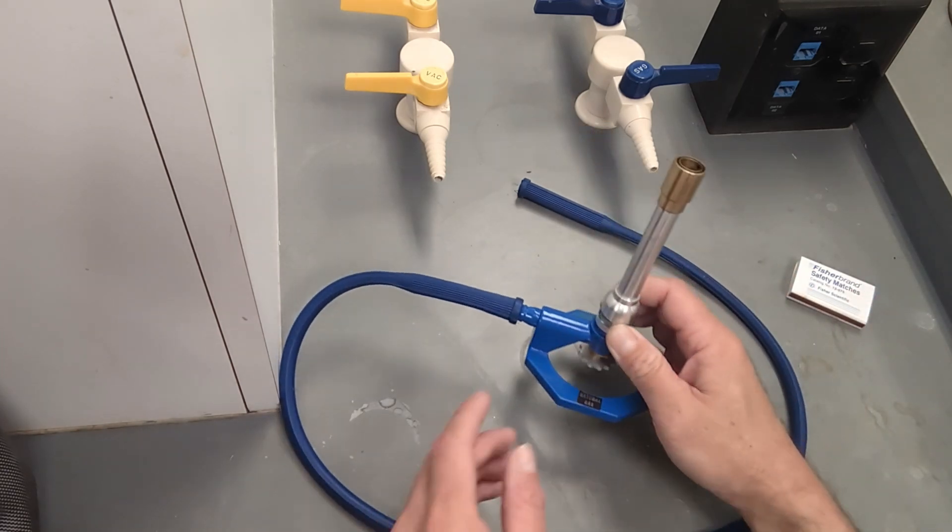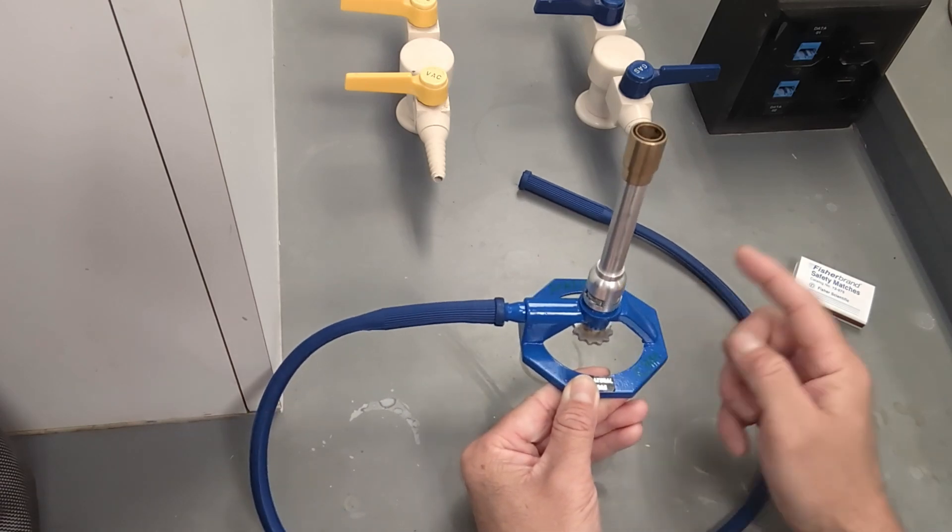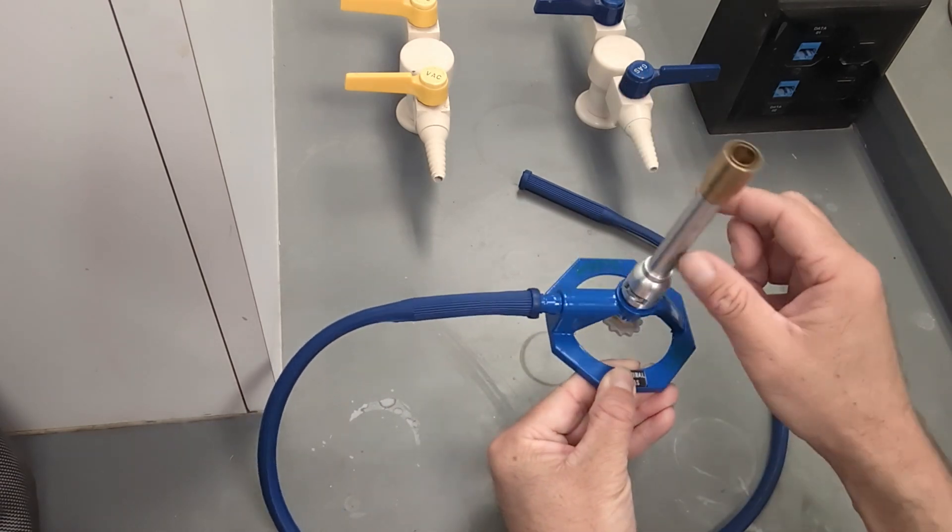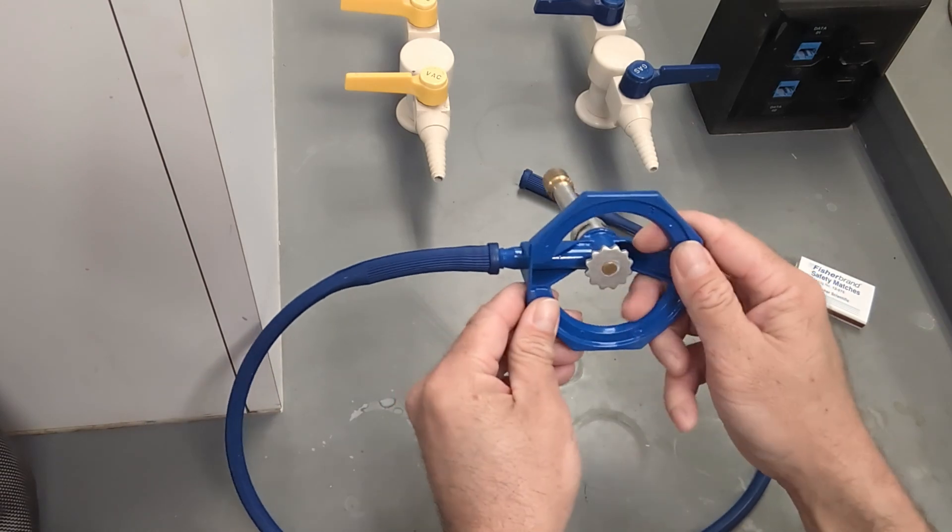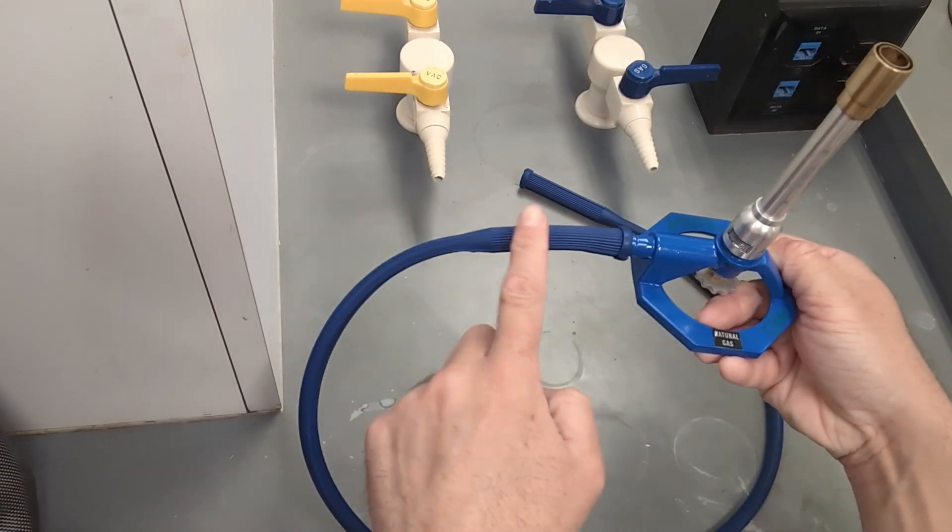The Bunsen burner consists of several parts. The base holds the entire Bunsen burner steady. The collar above is used for air flow and the stopcock below is used for gas flow.